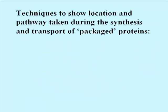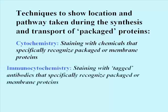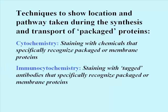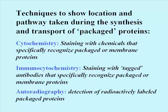Three techniques have been used to show how proteins made in the rough endoplasmic reticulum make their way through the Golgi to their final destinations. These techniques are cytochemistry, which is staining with chemicals that will specifically recognize packaged or membrane proteins; immunocytochemistry, which is staining with tagged antibodies that specifically recognize packaged or membrane proteins; and autoradiography, which is the detection of radioactively labeled packaged proteins so that we can localize them in appropriate organelles.